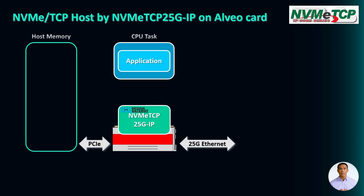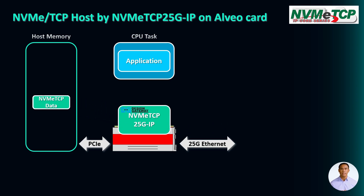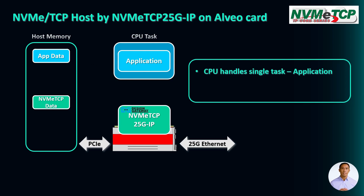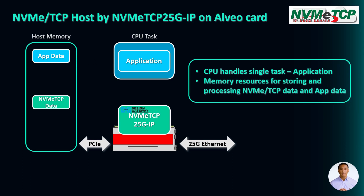We have proposed a new solution that utilizes the Alveo Accelerator card integrated with NVMe TCP 25G IP. The NVMe TCP 25G IP decodes the Ethernet packet from the 25G Ethernet connection, and the resulting NVMe TCP data is uploaded to the host memory via the PCIe interface at very high speed using the Xilinx platform. The CPU then executes only the application to decode and process the data. In this system, the CPU only needs to handle a single task — running the application — and memory resources are used more efficiently, reducing the load on the CPU and allowing for faster data processing.